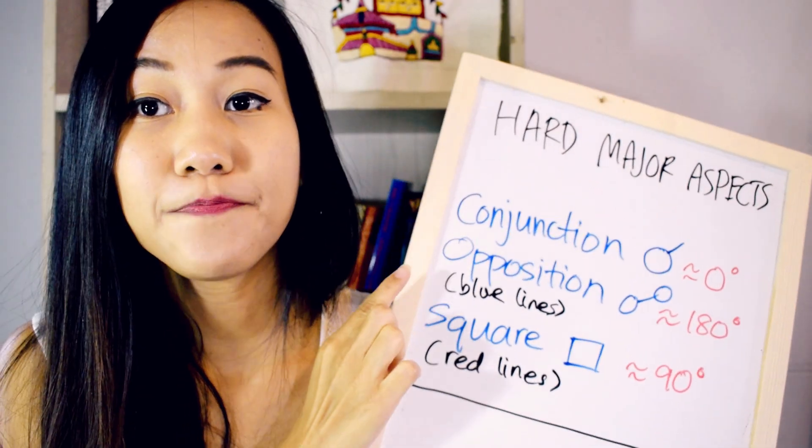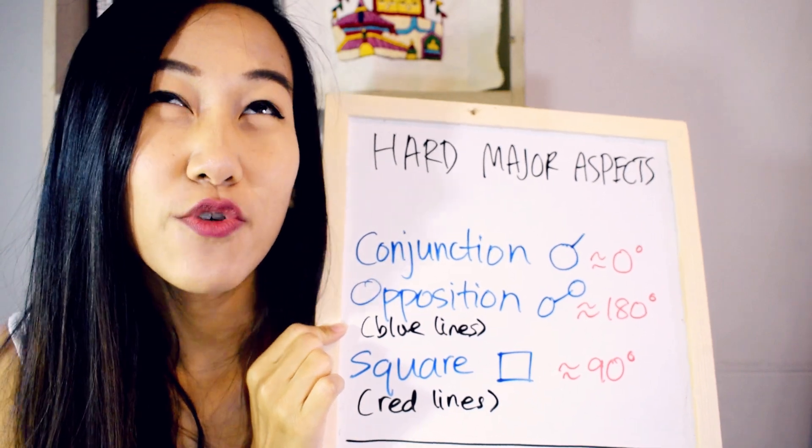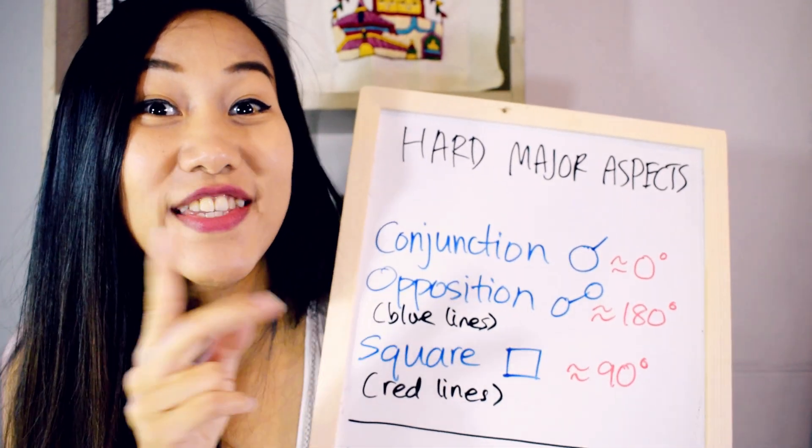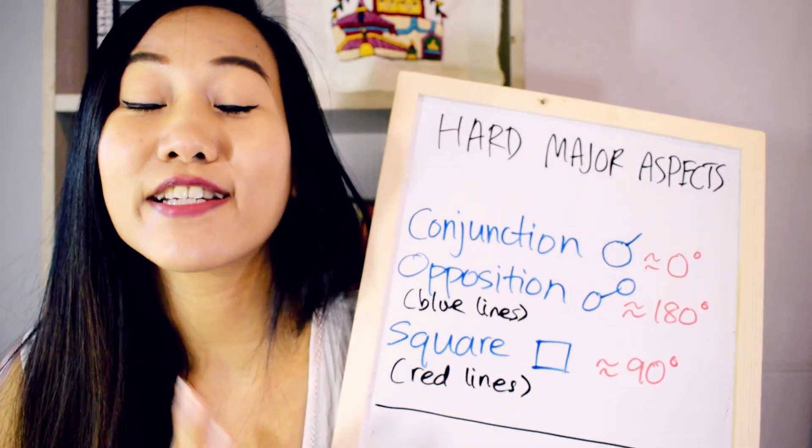The opposition is when planets are 180 degrees apart and they usually will be in opposite signs, but not always, because they could be an out-of-sign opposition. So back to gym class.